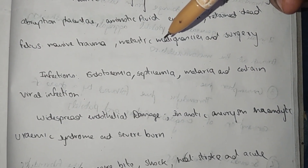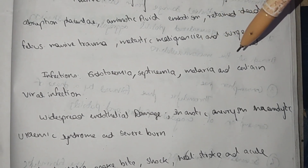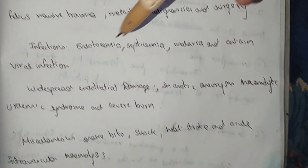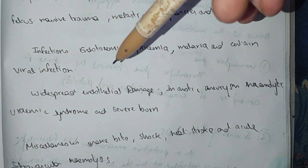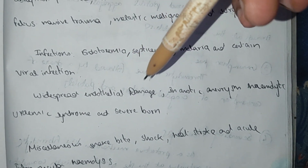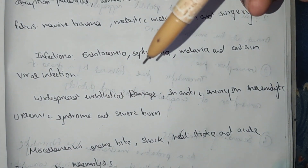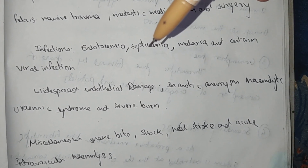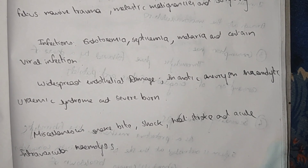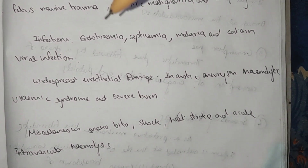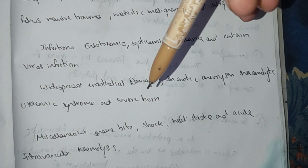Infections which cause DIC include endotoxemia, septicemia, malaria, and certain viral infections. Widespread endothelial damage from aortic aneurysm, hemolytic uremic syndrome, and severe burns also cause DIC. Due to this endothelial damage, blood gets clotted in the endothelium lining causing no blood flow and ischemia to the organs. Miscellaneous causes include snake bite, shock, heat stroke, and acute intravascular hemolysis.